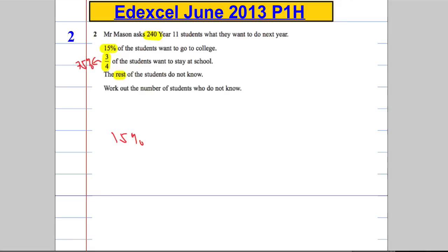15% plus 75% equals 90%. Okay, so 90% of the students are either at college or school. The rest don't know. That's the last 10%.